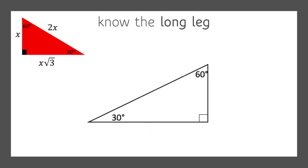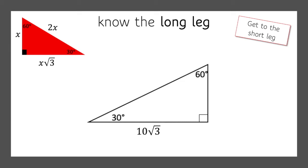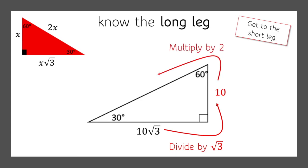Now what happens if we know the long leg? Remember, it's all about the short leg, so we have to get to the short leg first. If we know the long leg is 10 times the square root of 3, we're going to reverse the process and divide by the square root of 3, and we get 10. Now that we know the short leg, we can get to the hypotenuse — multiply by 2 — and so we know the hypotenuse is 20.